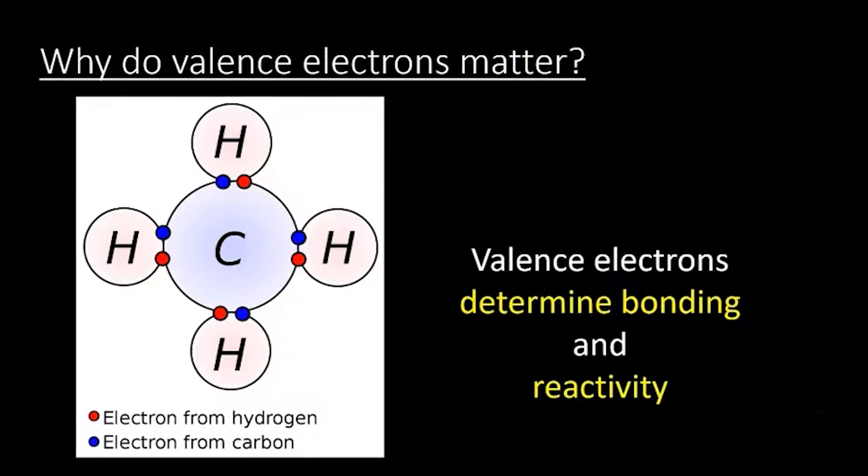So why do valence electrons matter? Well, they really matter because the outermost electrons are what determines bonding and reactivity. So if you're going to run into any electrons around an atom, they're going to be the outside ones. And so those are the ones that tend to interact to form bonds or to react with anything. And so here you can see that I have carbon, hydrogen, and there's 4 hydrogens around it. And the electrons forming their bonds are shown in red and blue there. Those are the valence electrons of hydrogen and the valence electrons of carbon coming together to form a bond. So the valence electrons are the most important electrons for determining the reactivity and properties of an atom or molecule.